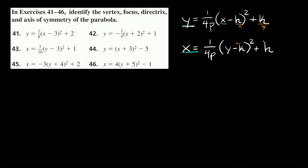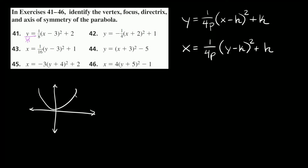Now that we have our intro out of the way, let's jump into problem 41. We need to find the vertex, focus, directrix, and axis of symmetry of y equals 1/8 times x minus 3 squared plus 2. The first thing I notice is that we have y is equal to all this, so that means we're going to have a parabola that opens up or down. We have a positive number in front, so it's going to open up.